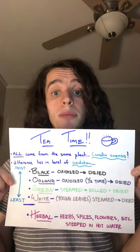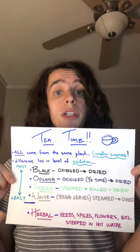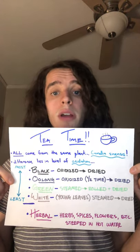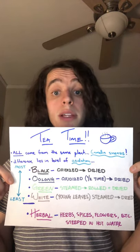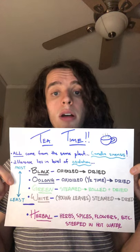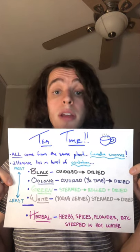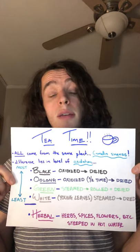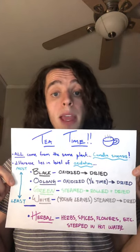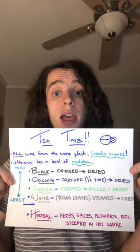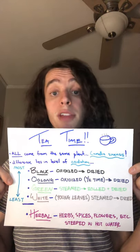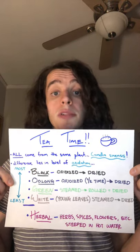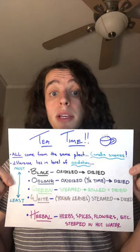I thought it would also be valuable to mention herbal tea, which is a bit of a misnomer. I'm not sure if herbal tea is where the misconception of different teas coming from different plants may originate from, but herbal tea is a misnomer because it does not actually come from the tea plant. Instead, herbal tea is a combination of various herbs, spices, flowers, and basically any other plant material. The combination of these is endless and can vary, which results in different flavors. All of these are simply steeped in hot water to produce our herbal tea. As a result, herbal teas do not have any caffeine in them because they don't come from our tea plant.